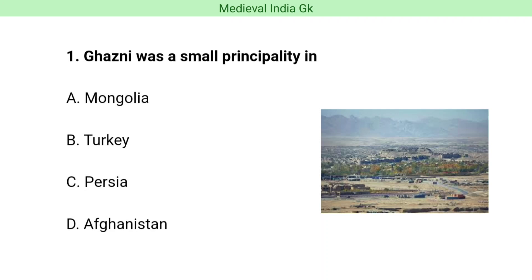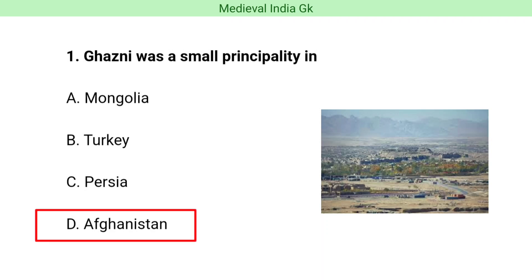Question number one. Ghazni was a small principality in which country? The correct answer is option D, i.e. Afghanistan.